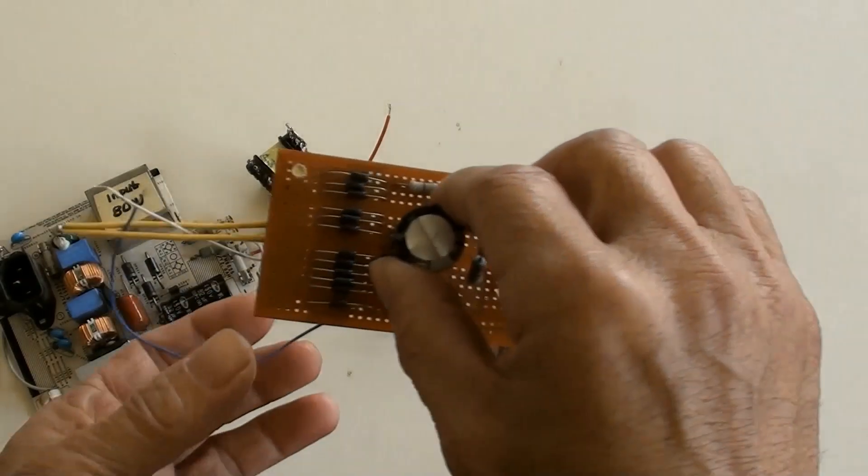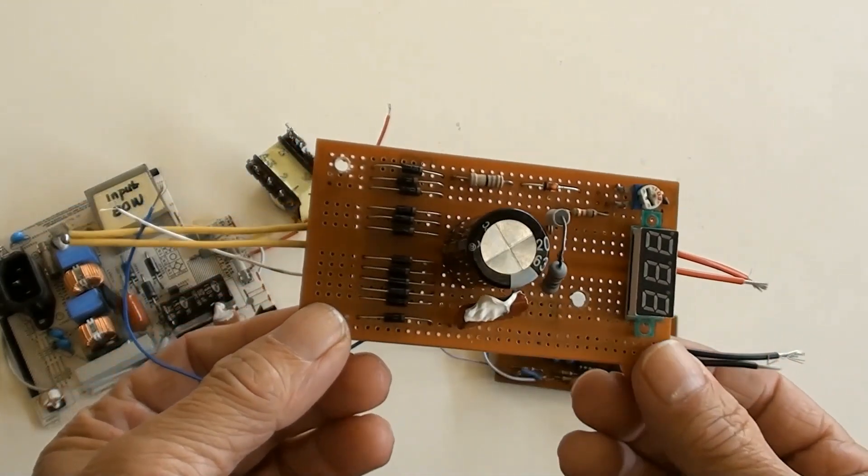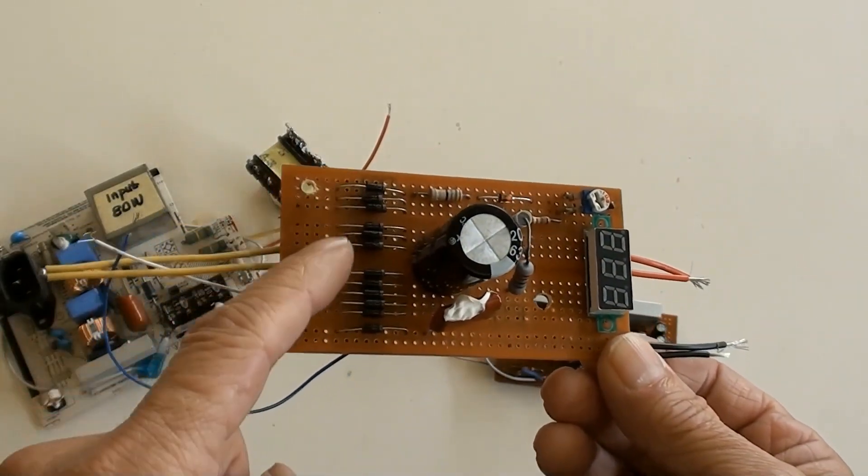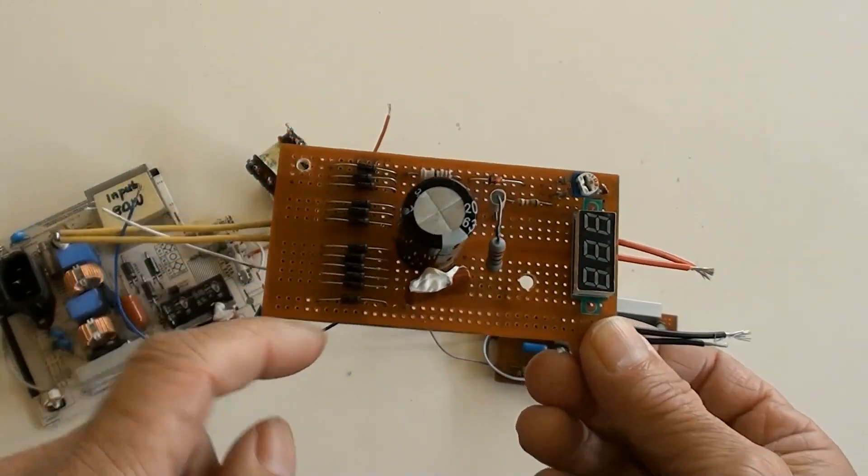That is also made by DIY, which is the converter's output circuit board. These are the rectifier diodes and a capacitor.